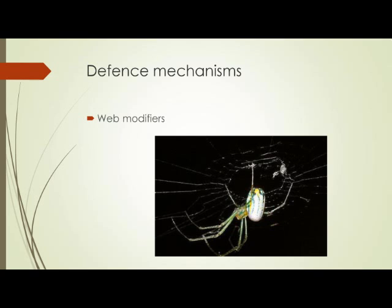Besides shaking the web, some spiders modify their webs as a form of defense. This includes building tangles of silk on either the front or back of the web, or both. This serves multiple functions: besides giving structural support to the web, it acts as an early warning system against approaching predators such as wasps. This is used by the spider species Leucauge.